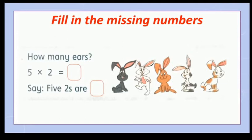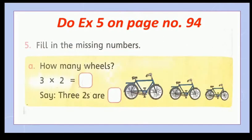Here you can see how many rabbits? One, two, three, four, five, five rabbits. Each rabbit has one, two, two ears. Each rabbit has two ears. How many ears of five rabbits? So five times two is ten, or five twos are ten. Then now do exercise five on page number ninety-four in your book.